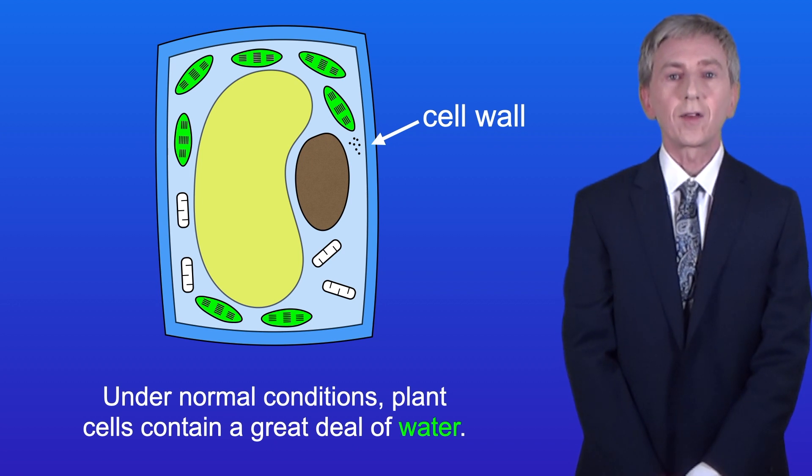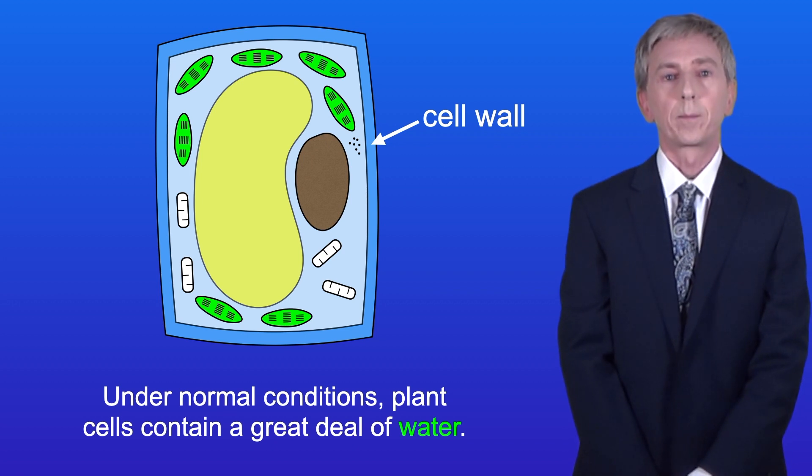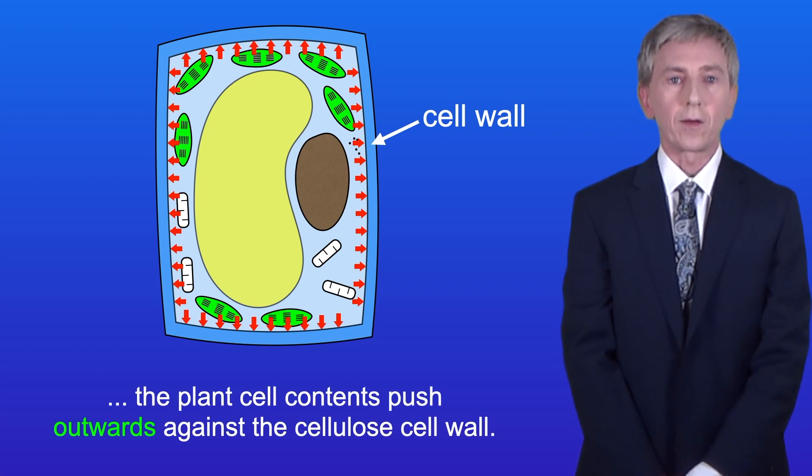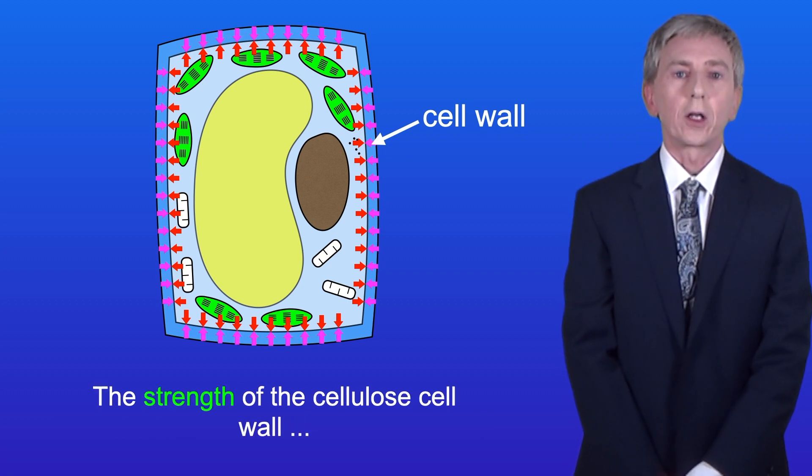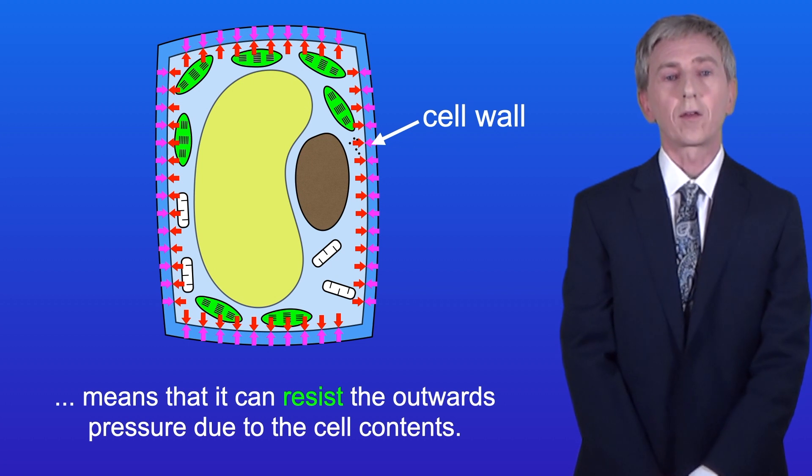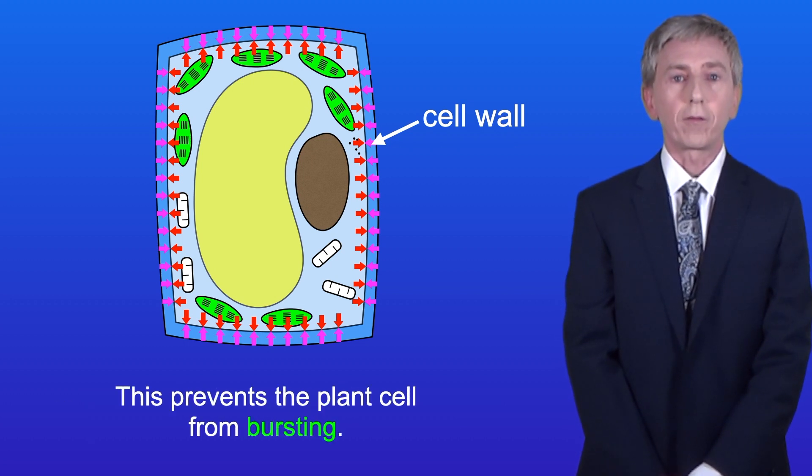Under normal conditions, plant cells contain a great deal of water. As water moves in by osmosis, the plant cell contents push outwards against the cellulose cell wall. The strength of the cellulose cell wall means that it can resist the outwards pressure due to the cell contents, and this prevents the plant cell from bursting.